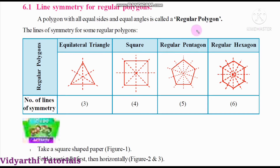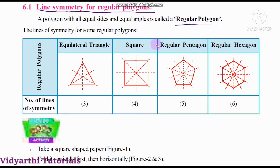Today we are going to see about line symmetry for regular polygons — how to draw lines of symmetry for regular polygons. A polygon with all equal sides and equal angles is called a regular polygon. Equal angles and equal sides — if a polygon has these, it is called a regular polygon.